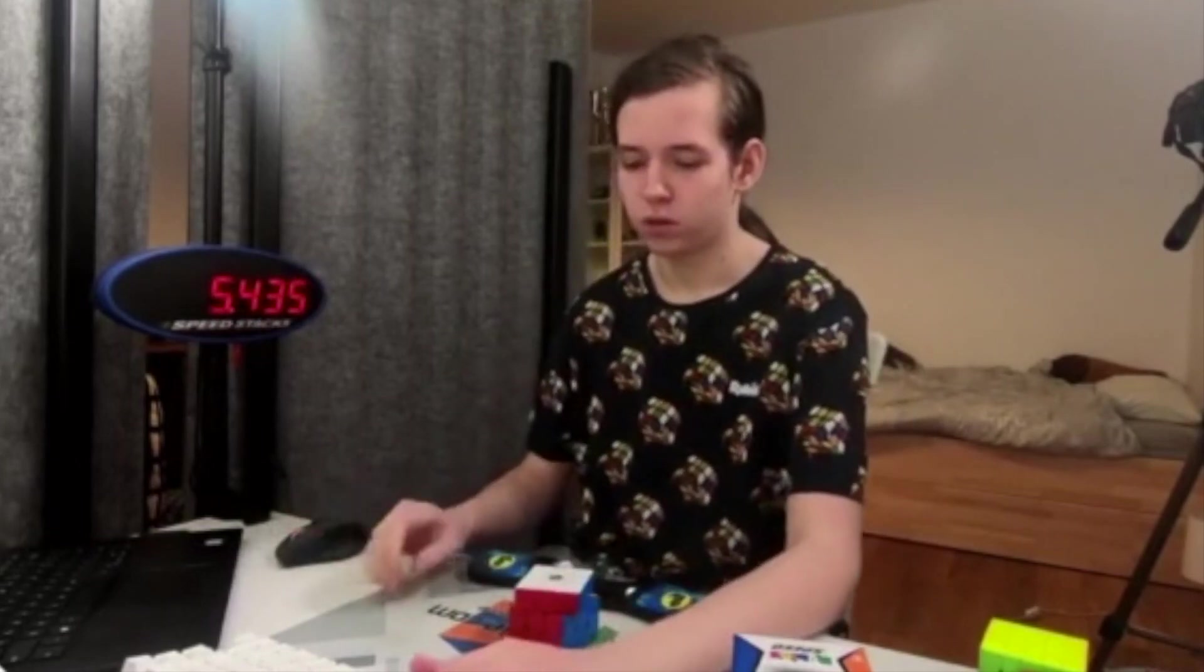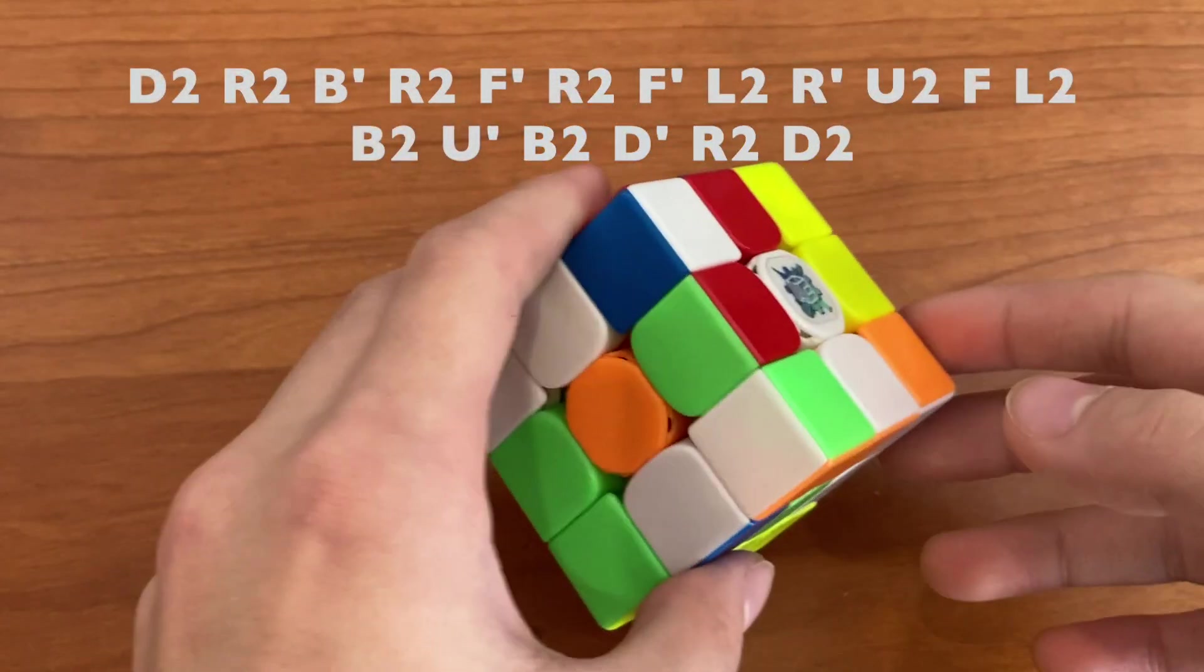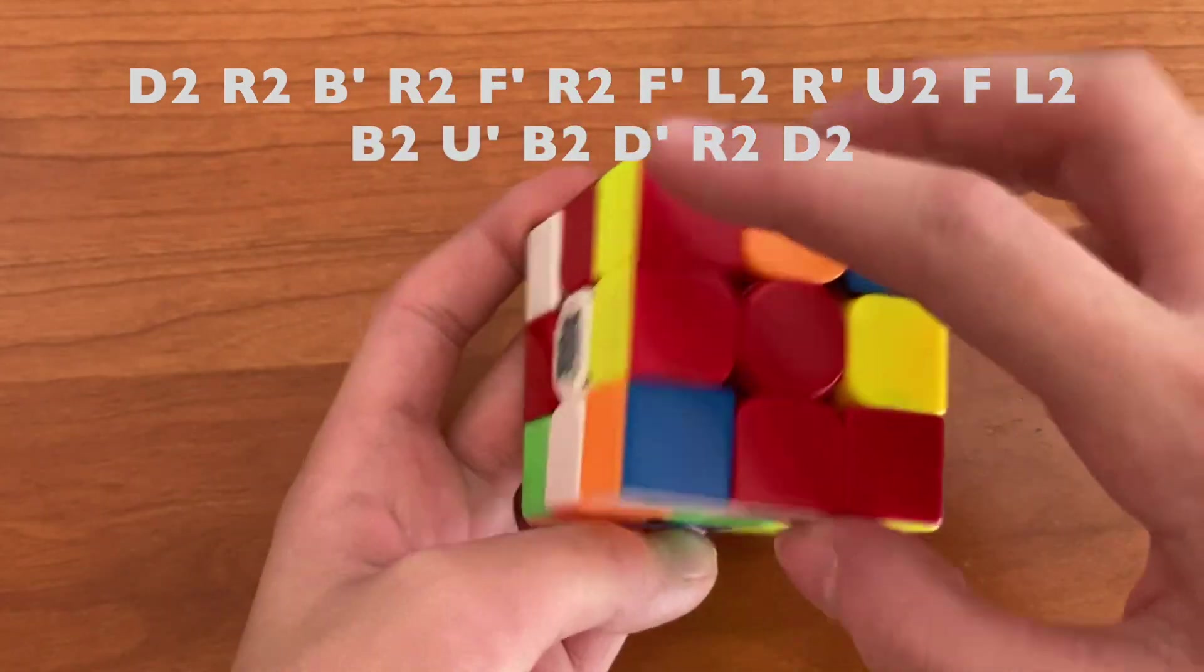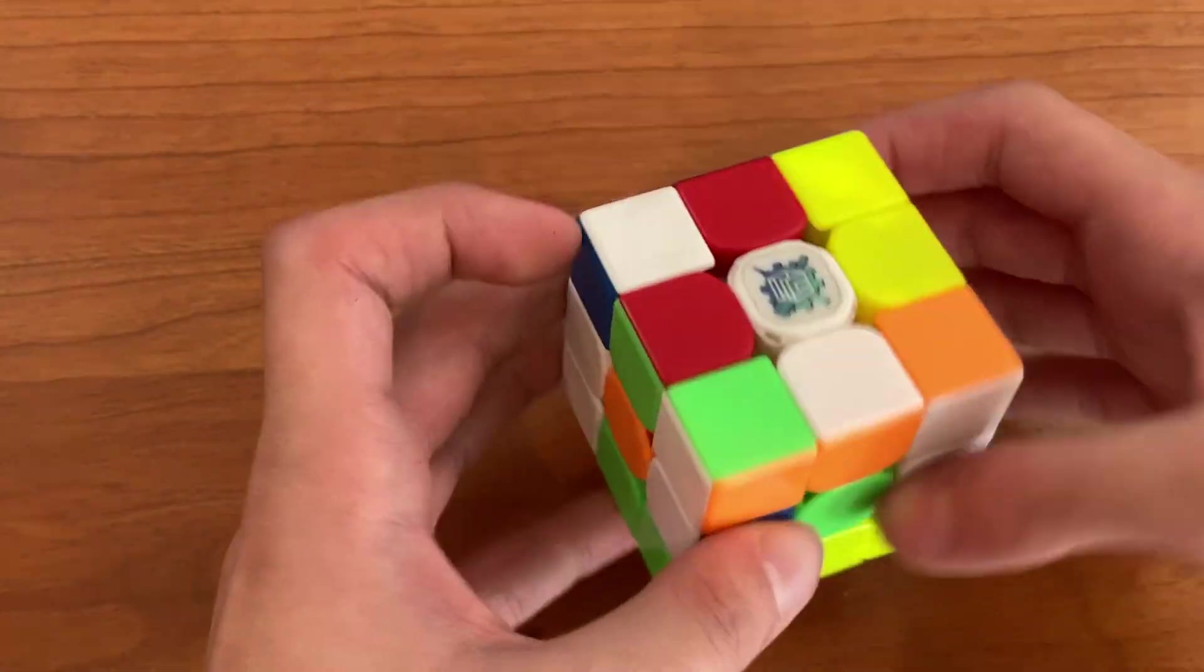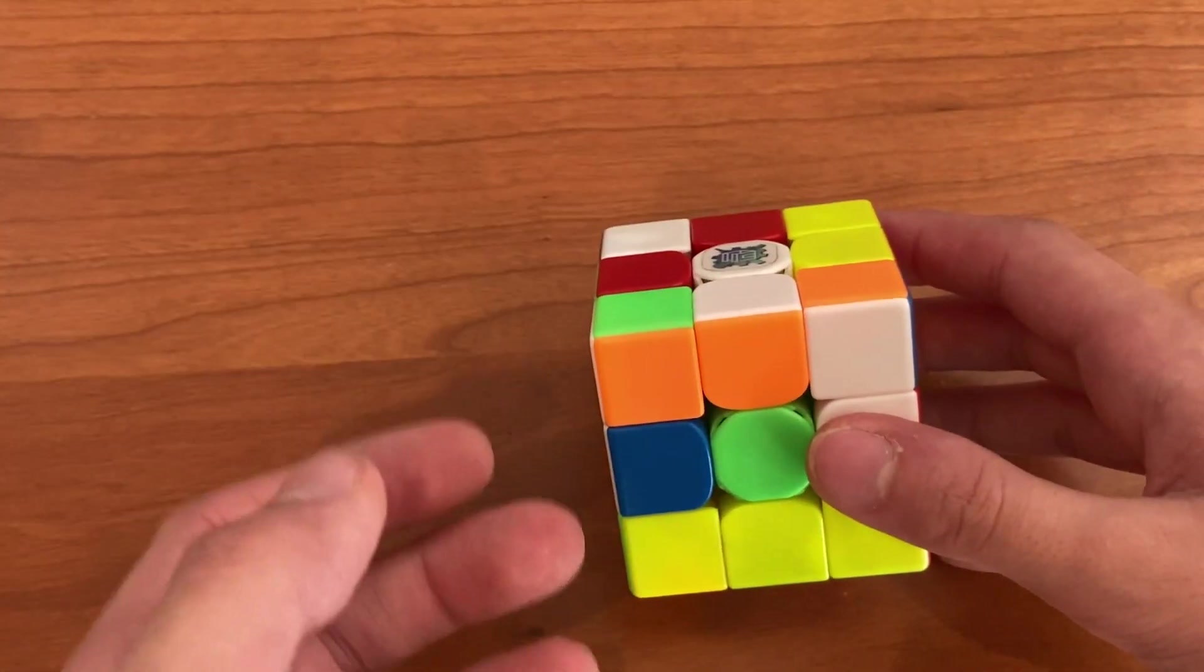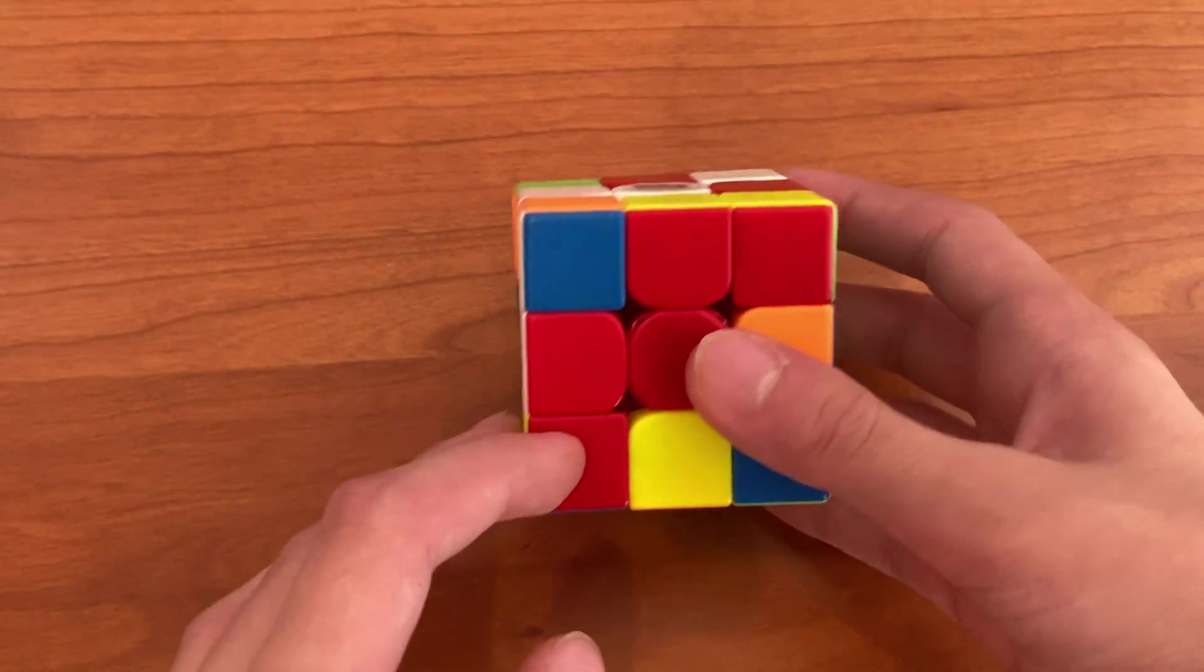That's 5.43. Looks like some lockup on that ZBLL. Okay, so for this next solve, a 5.43, Timon went for yellow cross. As you can see, the cross pieces are here, here, here, and here. And Timon's actually going to go for a pseudo double X-cross. It's actually insane. I have no idea how he could plan all of this. So as most people would, he puts in these two pieces first.